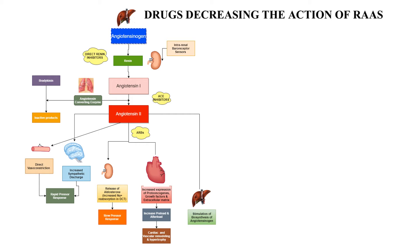From the kidneys, angiotensin II releases aldosterone, which increases sodium and water retention in the distal convoluted tubules, increasing blood volume and causing a slow rise in blood pressure. Angiotensin II also acts directly on the heart, increasing sympathetic discharge, heart rate, cardiovascular remodeling, left ventricular hypertrophy, preload and afterload, leading to congestive cardiac failure on a long run. Additionally, angiotensin II increases release of angiotensinogen from the liver.